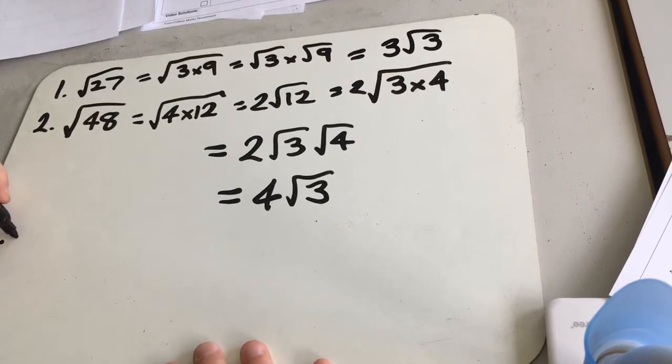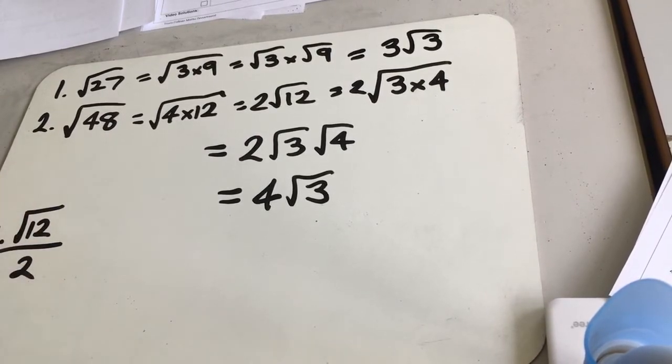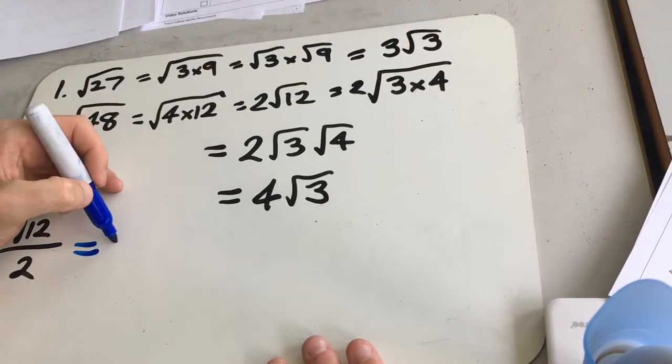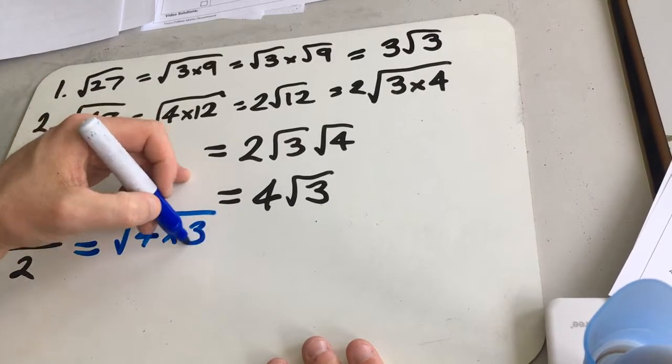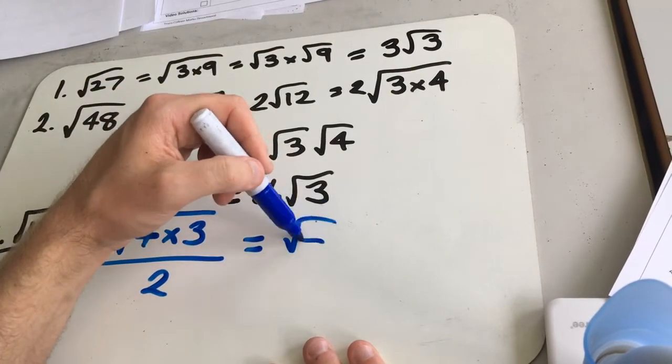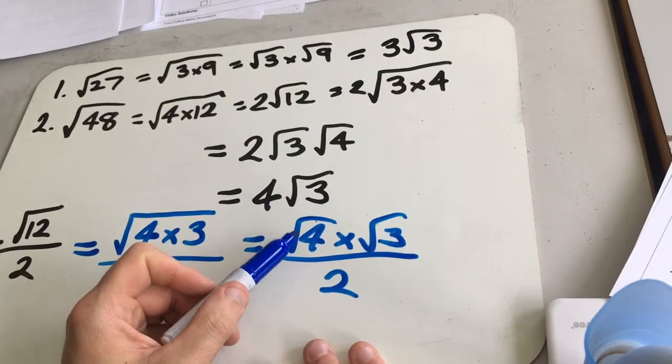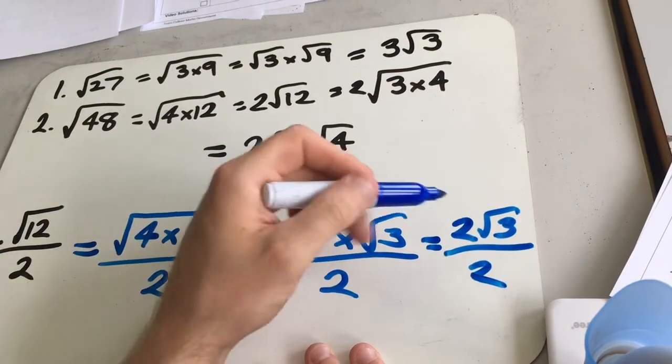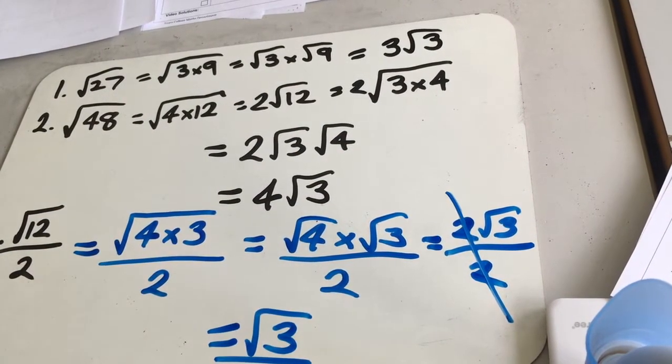Question 3, so we've got root 12 over 2. So we're going to split up root 12 again into 4 times 3. So 4 times 3 over 2. And we can split that further up into root 4 times root 3 over 2. We know root 4 is 2, so we get 2 root 3 over 2. Those 2s are going to cancel, so the whole thing becomes the square root of 3.